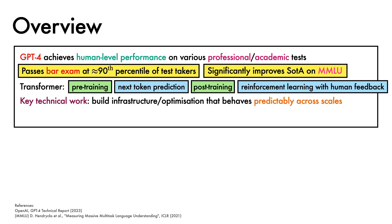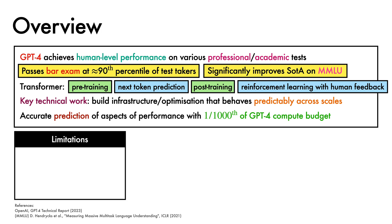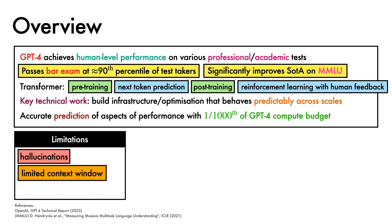A key technical component underpinning the model was the building of infrastructure and optimisation methods that behave predictably across different scales. This enabled accurate prediction of some aspects of the final model's performance with one-thousandth of GPT-4's compute budget. Some notable limitations of GPT-4 that it shares with its predecessors include its propensity to hallucinate incorrect information, its limited context window, and the fact that it does not learn from experience.